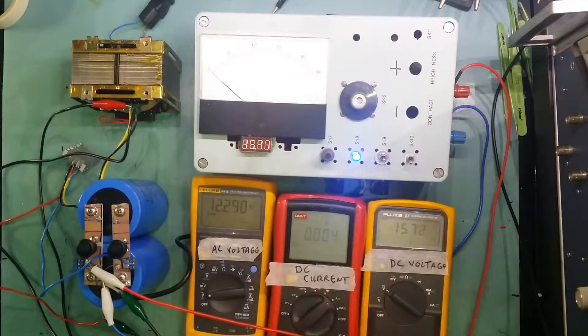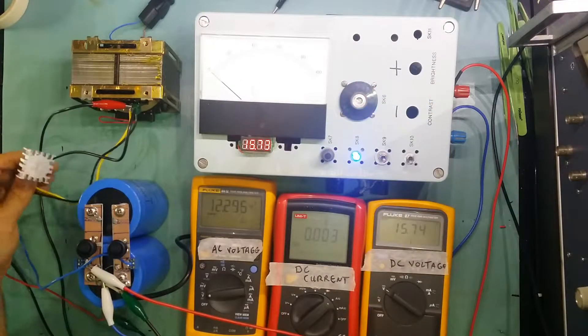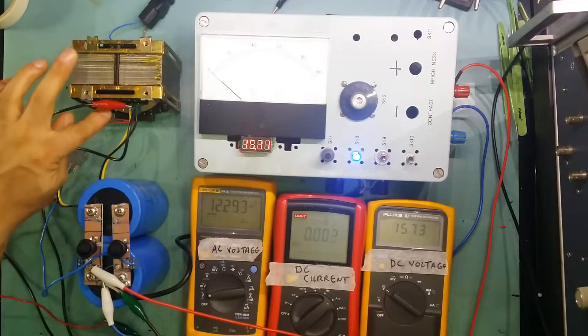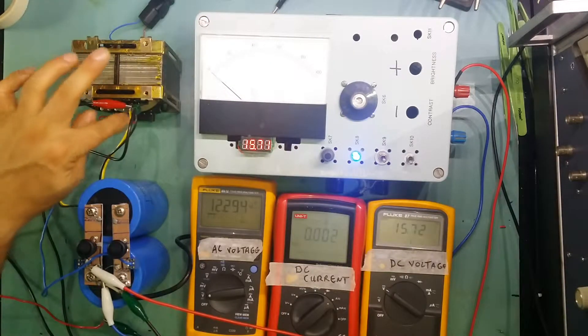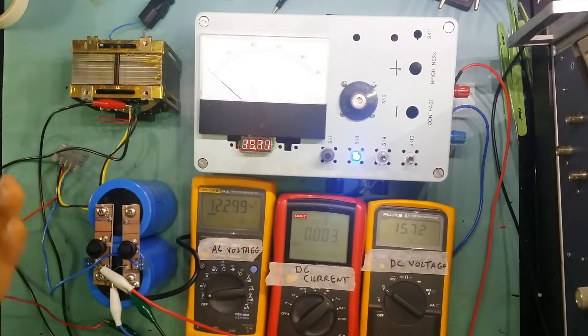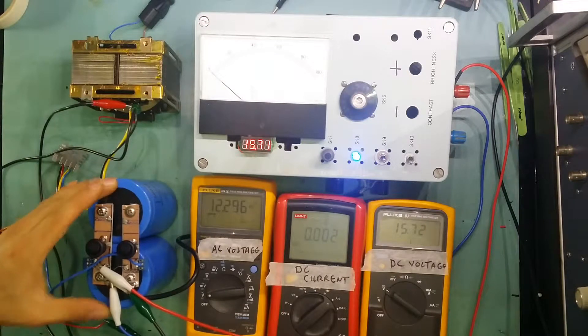So at the moment what you can see here, this is the transformer. It's got multiple taps, it's got a 20 volt tap, 36 volt tap, and a 15 volt. So 12.2 that I got. The setup here I have two capacitors, 33,000 microfarad.